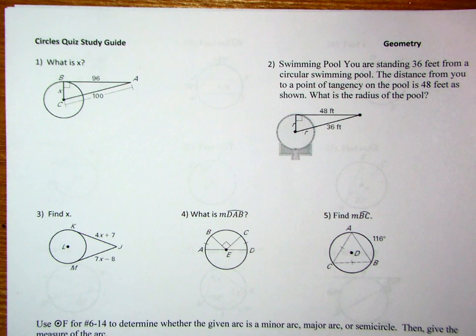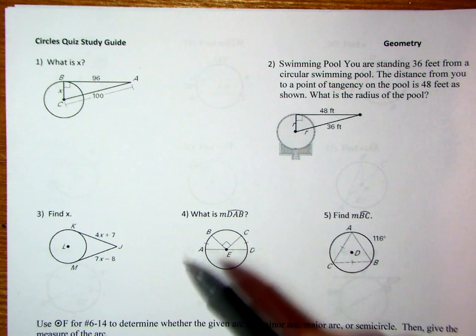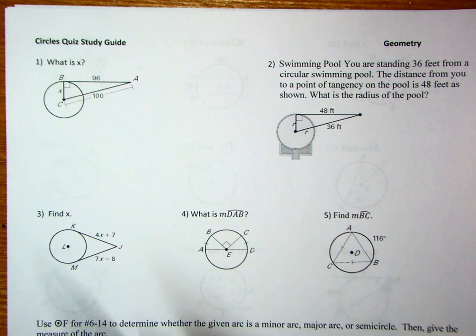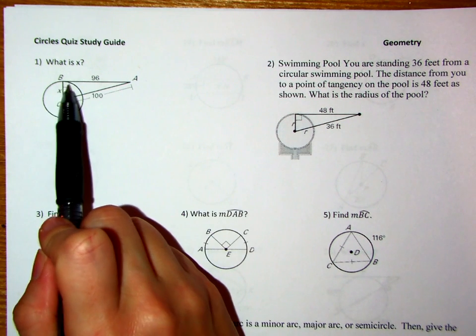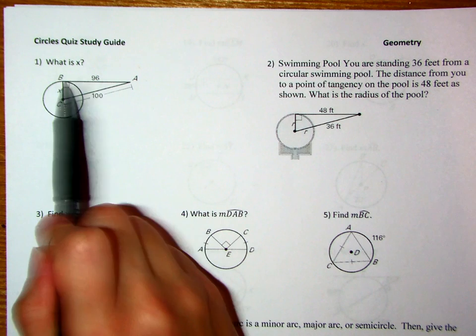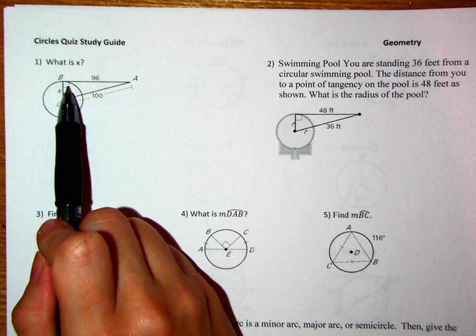This is numbers 1 and 2 on the study guide. What we have in number 1 is that we have a radius and it's attached to a tangent that comes here, which means we get a right angle whenever we have a radius and a tangent, they form a right angle.